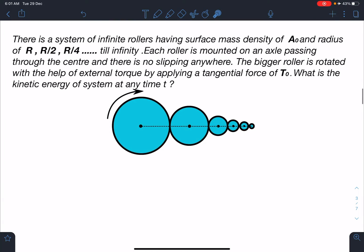Here is the statement of this problem: There is a system of infinite rollers having surface mass density of σ and radius of R, R/2, R/4 till infinity. Each roller is mounted on an axle passing through the center and there is no slipping anywhere. The bigger roller is rotated with the help of external torque by applying a tangential force of T₀. What is the kinetic energy of the system at any time t?